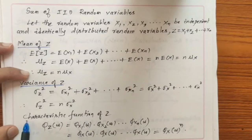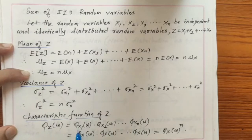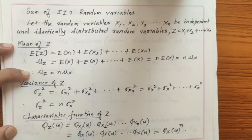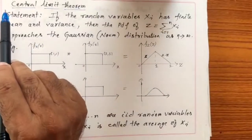Similarly, we can find the characteristic function of Z. Since X1, X2, ..., Xn are independent, the characteristic function of Z is the product of the characteristic functions of the individual random variables X1, X2, ..., Xn. Since they are identically distributed, we replace each Xi by X, giving φz(ω) = [φx(ω)]^n.